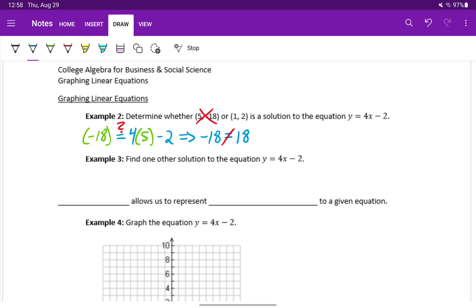Now we want to go through the same process with the point 1 comma 2. We'll plug in 2 for our y variable, we'll plug in 1 for our x variable, and see if the two sides of this equation are equal when we substitute in those values.